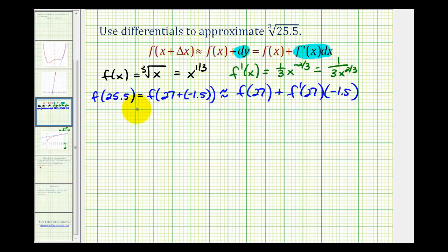Now we have all the information we need to determine this approximation. f of 25.5 is approximately equal to the function evaluated at 27, which is the cube root of 27...